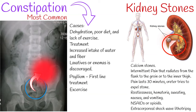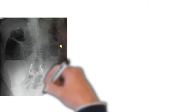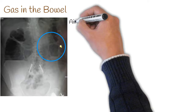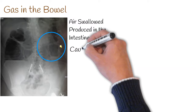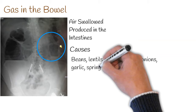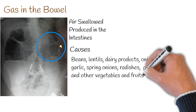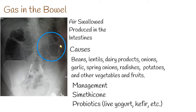Gas in the intestines and bloating can cause lower abdominal pain. Air can be swallowed during eating or drinking, or it can be produced in the intestines as a byproduct during digestion. Gas-producing foods include beans, lentils, dairy products, onions, garlic, spring onions, radishes, potatoes, and other vegetables and fruits. Preparations containing simethicone operate by promoting the coalescence of smaller bubbles into larger ones more easily passed from the body.